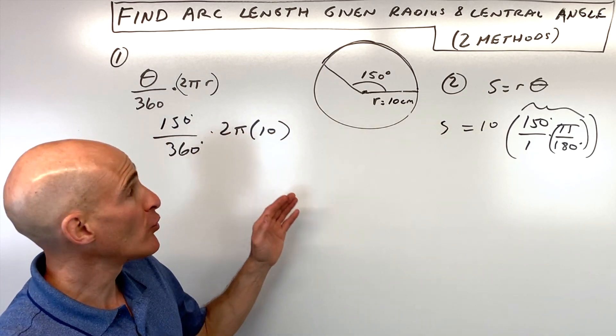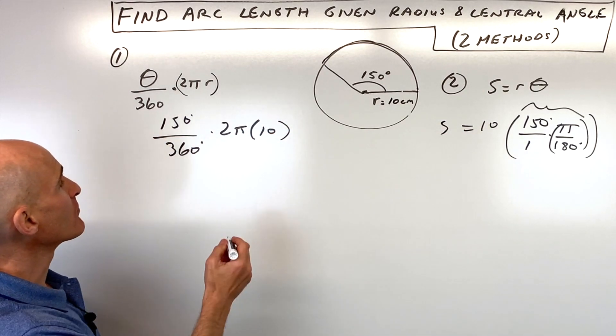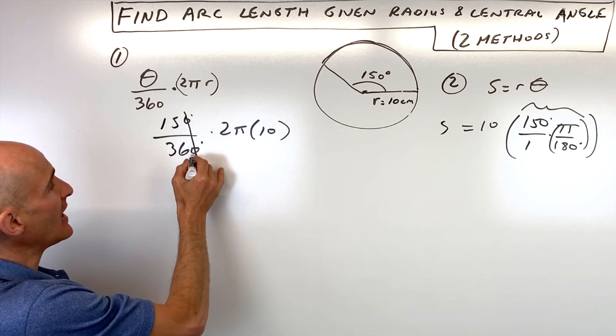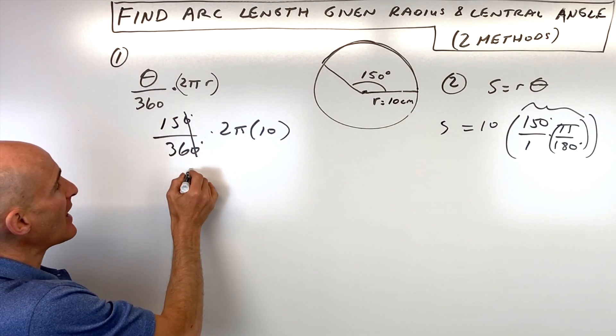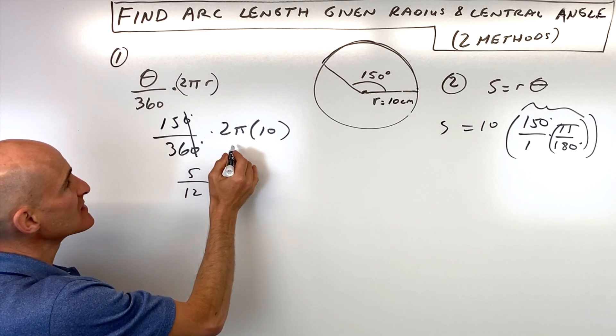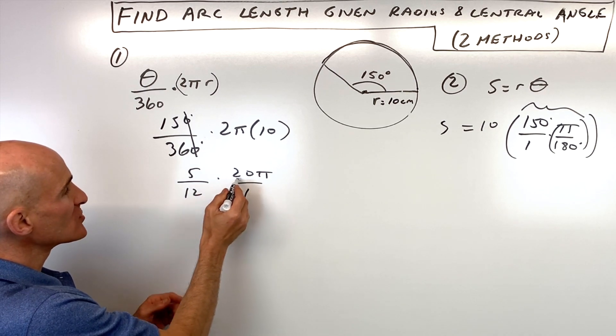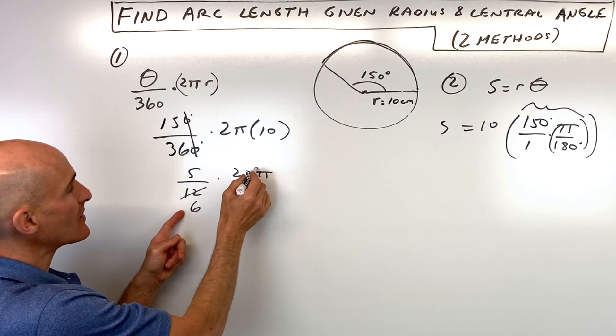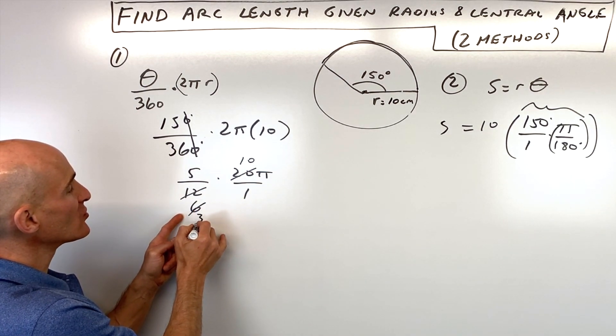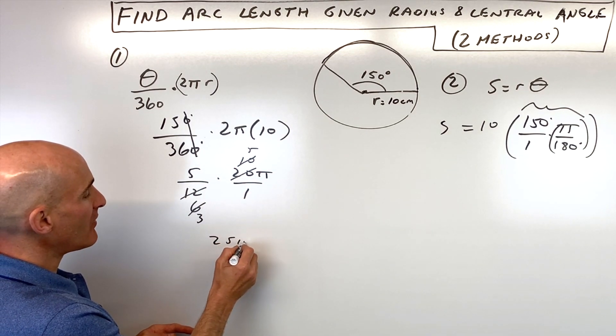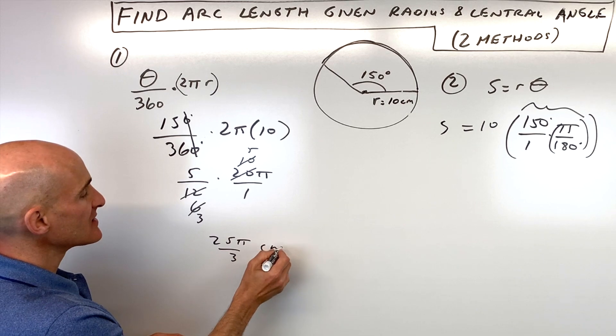Let's simplify both formulas. We can reduce by dividing by 10. Three goes in 5 times and 12 times, giving us 20π. Reducing further, 2 goes in 6 times, 10 times, 3 times, and 5 times. So we get 25π over 3 centimeters.